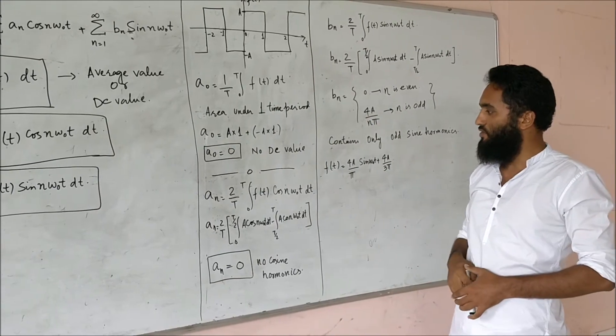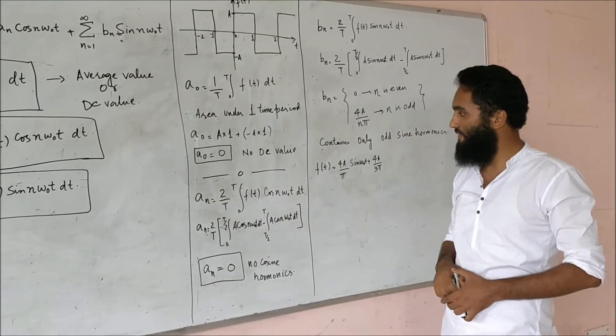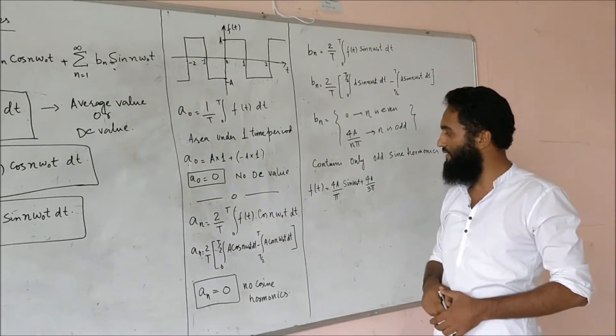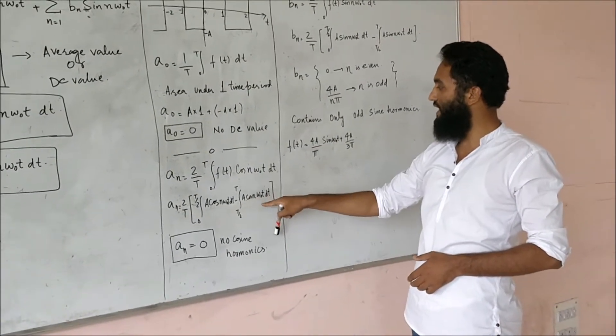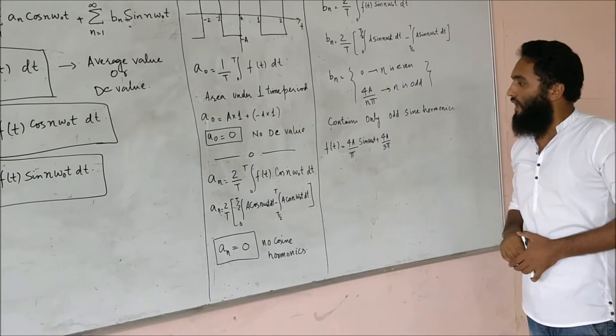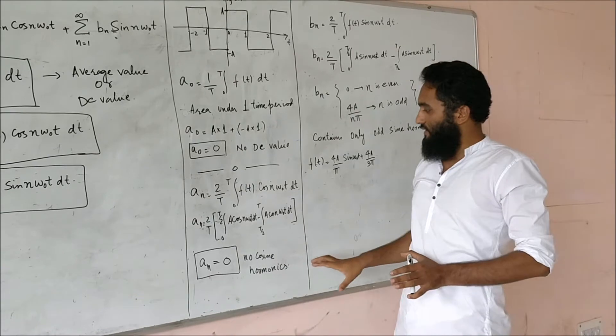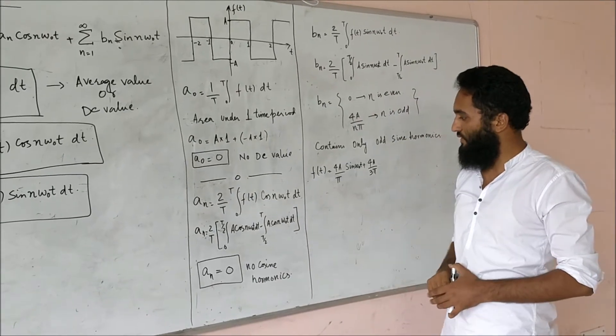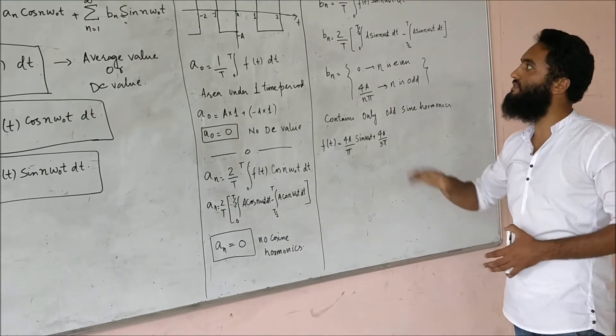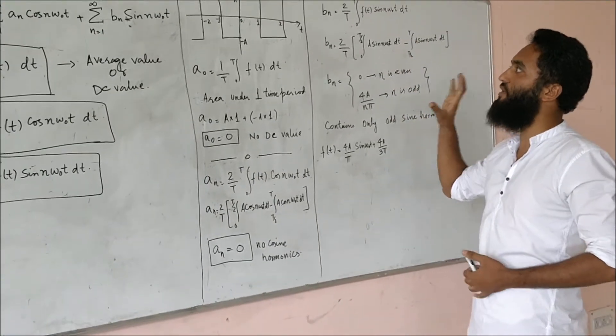I can break this integral into half integrals: 0 to T by 2, A cos(n omega_0 t), and minus A cos(n omega_0 t) from T by 2 to T. When I solve this integral, this comes out to be 0. There is no weightage of cosine harmonics. This signal does not contain any cosine harmonics.